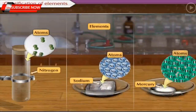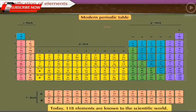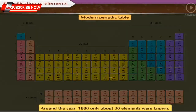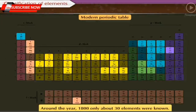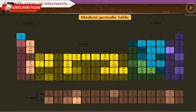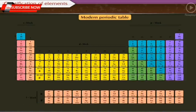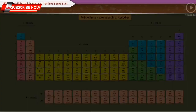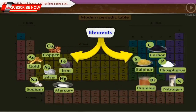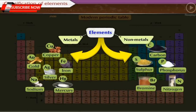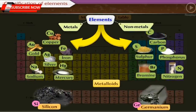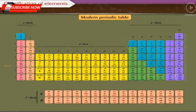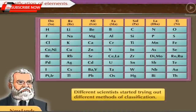Classification of Elements. We know that all the atoms of an element are of only one type. Today, 118 elements are known to the scientific world. Around the year 1800, only about 30 elements were known. In the course of time, more elements were discovered and more information about their properties was collected. To ease the study of elements, scientists started finding whether there was a particular pattern in this vast information. Initially, elements were classified into groups of metals and non-metals. Later, another class called metalloids was identified.